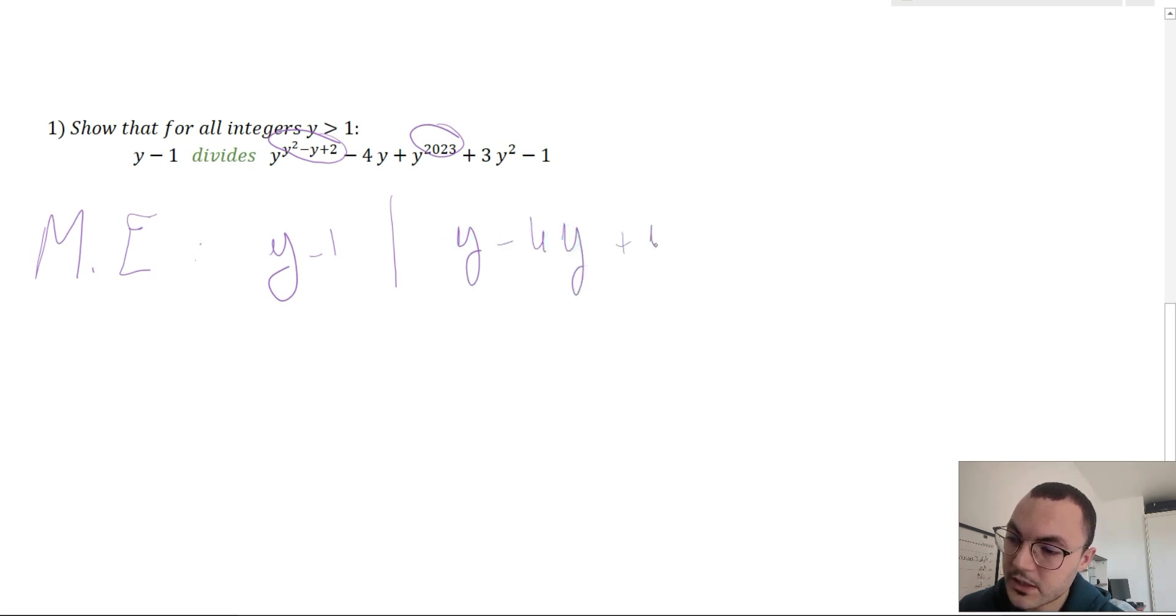Which is equivalent to y minus one divides -2y plus 3y² minus one.